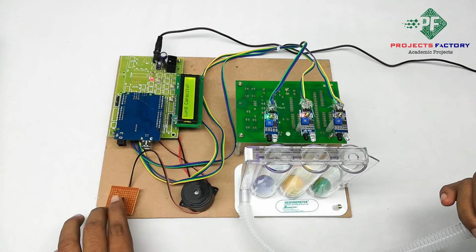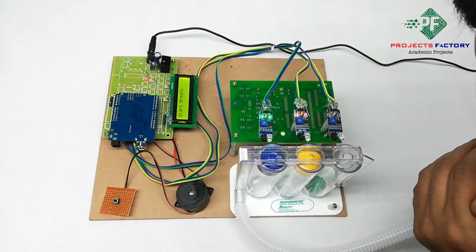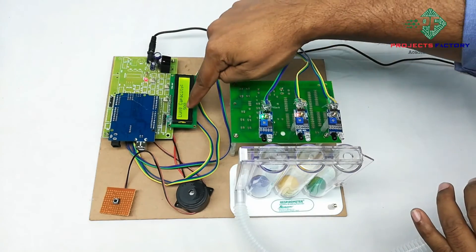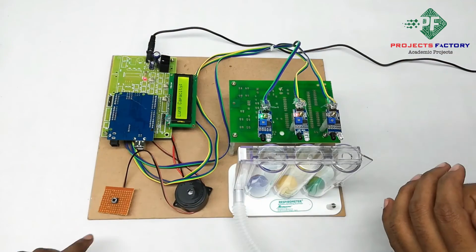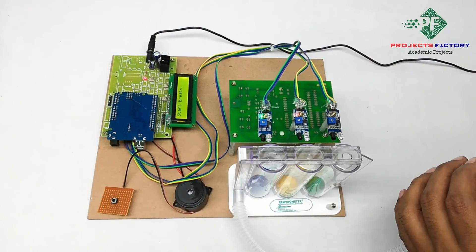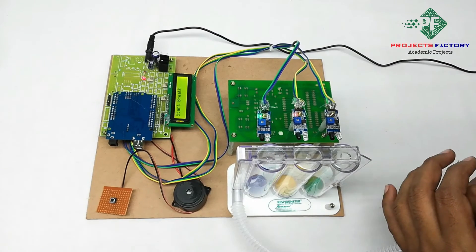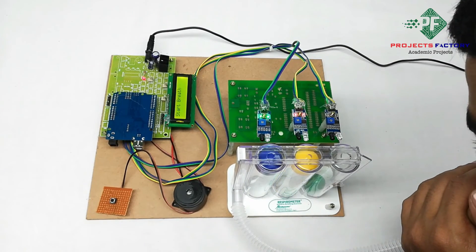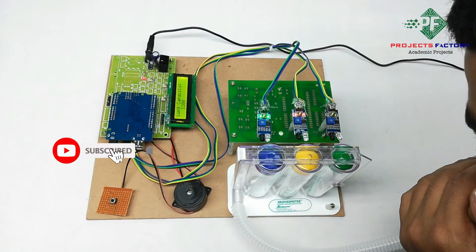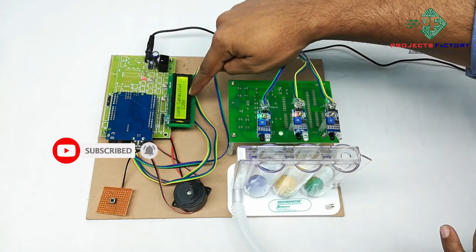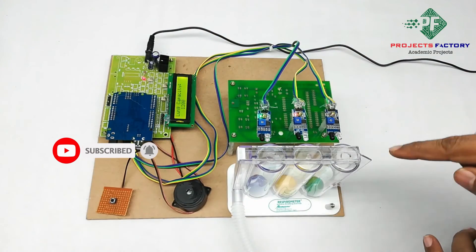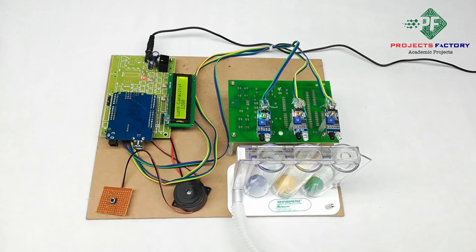Again we press this button. Two balls: 900. Lung capacity 1200 for three balls.